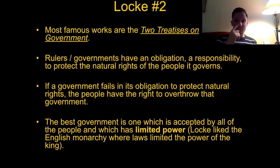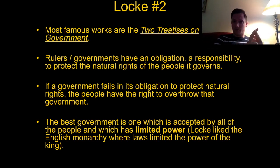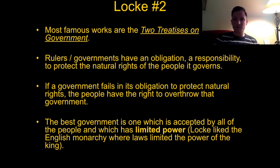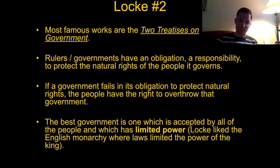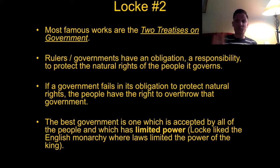This is John Locke — the simple outfit, no buttons, black and white. His most famous two works are his Two Treatises on Government. He believes that rulers and governments have an obligation to protect the natural rights of the people they govern. His natural rights include life and liberty, and underneath that umbrella: freedom of speech, freedom of religion, freedom of political views, freedom of protest. He believes everyone has a right to a good life, and among liberty are all those freedoms. He believes that if a government fails in its obligation to protect natural law and rights, the people have the right to overthrow that government — hence why he supports the Roundheads.